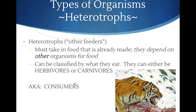Heterotrophs are everything else — animals are heterotrophs. You might say you've been making your food at home for 10 weeks, but you're making it on your kitchen counter, not inside your cells. Even if you physically prepare your food, you are not creating it internally, which is what an autotroph does. Heterotrophs must eat their food and get it from somewhere else.